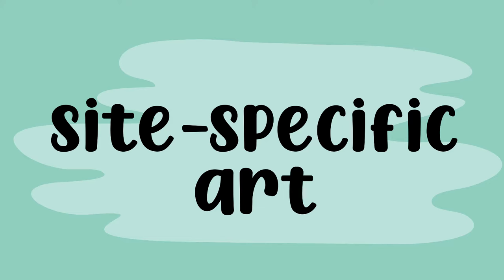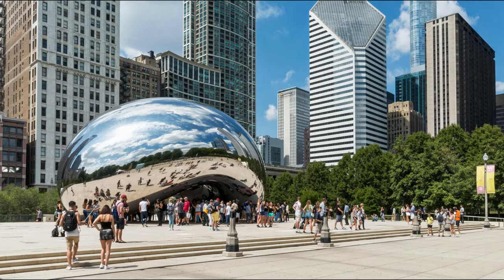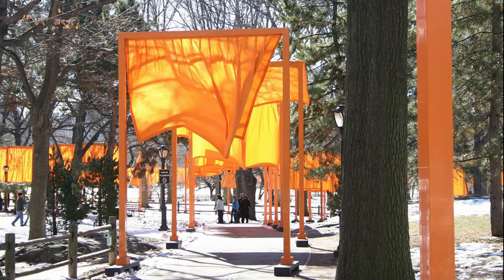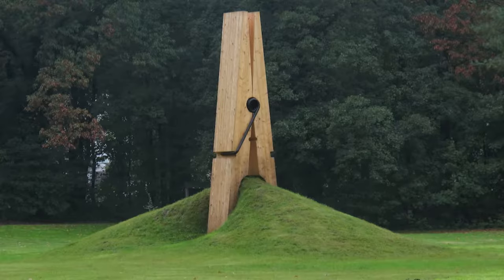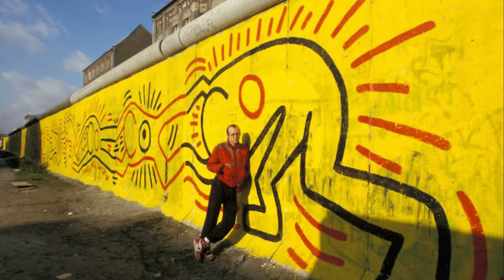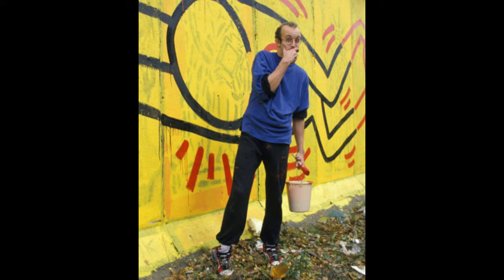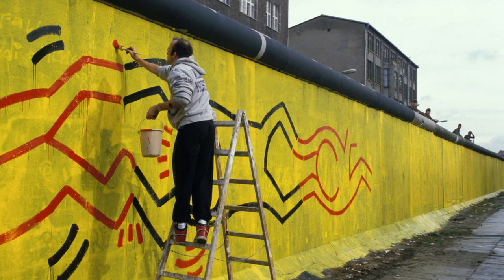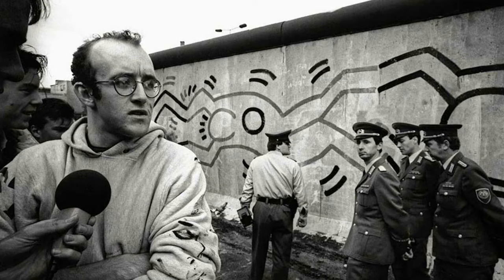Site-specific art is artwork created to exist in a certain place. Typically the artist takes the location into account while planning and creating the artwork. For this type of art, it's impossible to isolate the work from its surrounding environment. These can include sculpture, graffiti, installations and land art. One of my favorite site-specific artworks is a 300 meter mural that street art legend Keith Haring painted on the Berlin Wall.